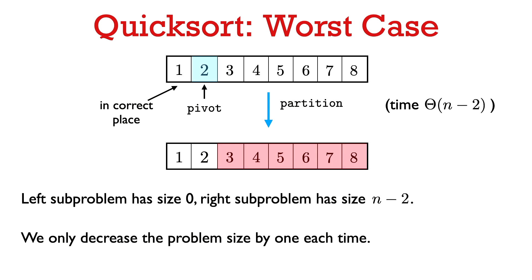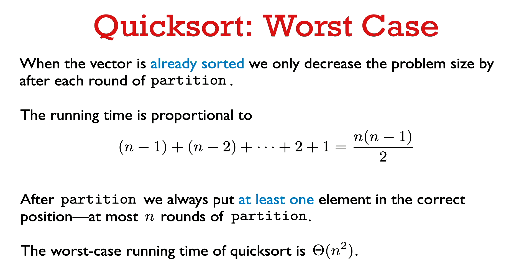Considering the right sub-problem next, we use two as the pivot — again, no elements less than two in that interval, giving a left sub-problem of size zero and a right sub-problem of size six (n-2 in general). We keep getting this behavior: each round of partition only decreases the sub-problem size by one — we get one sub-problem of size zero and one of size one smaller.